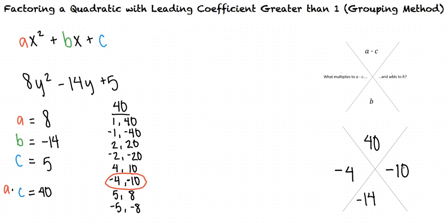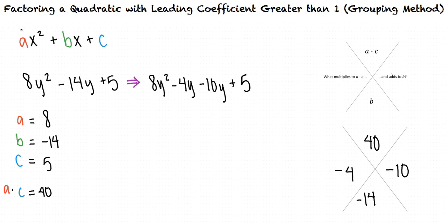Next, we can use these factors to rewrite our original quadratic. We rewrite this expression as 8y squared minus 4y minus 10y plus 5, using these factors that we determined to put into the middle of the expression.